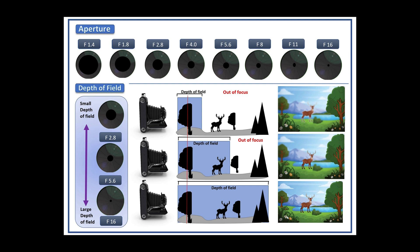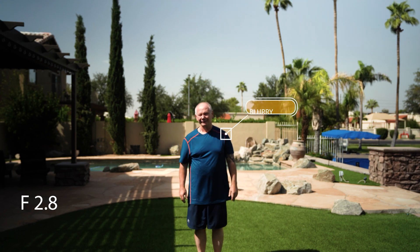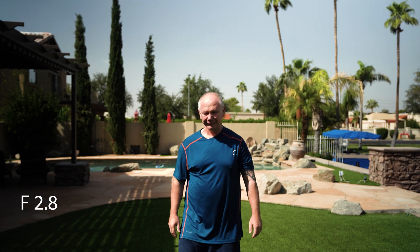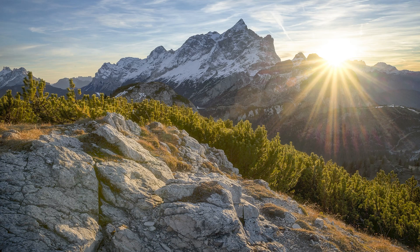At f16 or f22, everything in the scene is in focus — the mountains, the trees, the flowers, the stag, the river, everything. So if you want to shoot landscapes or wide open places, you want to go with a higher f-stop number. The smaller the hole, the more depth of focus. The shallower the depth of focus, the larger the hole. This focus range is very shallow, meaning if a person walks back or forth a foot or two, they'll be out of focus because they've stepped out of the depth of focus area. If your aperture is set to a high value like f16, there's a large depth of field and everything will be in focus — used for landscape scenes.